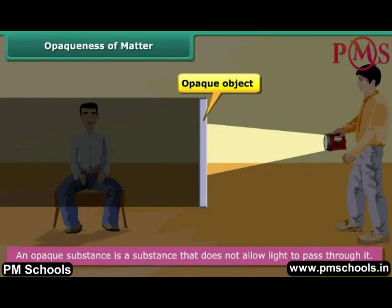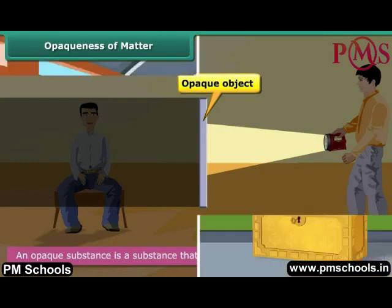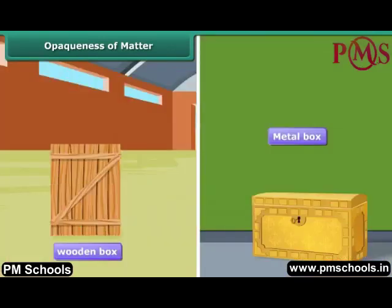An opaque substance does not absorb light. Instead, it reflects light back. Hence, we cannot see things through an opaque substance. For example, we cannot say what is kept in a closed wooden box or a metal container, as wood and metal are opaque.